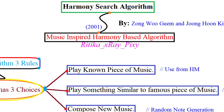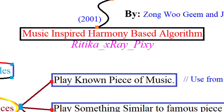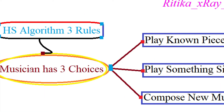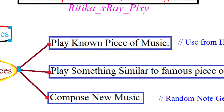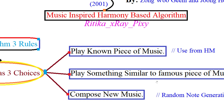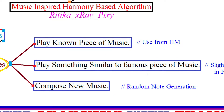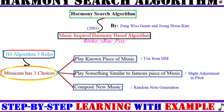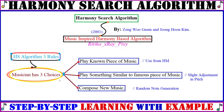This is a music-based optimization algorithm inspired by music harmony. Certain rules are followed in this algorithm. In real life, a musician has three choices: they can play a famous piece of music, play something similar to a famous piece of music, or compose new music. These three rules play a major role in this algorithm.